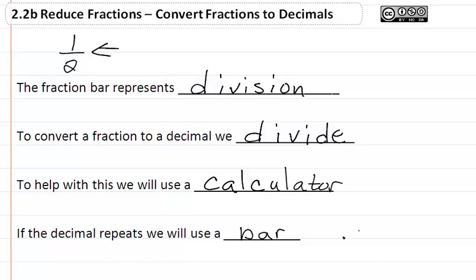So for example, if we get 0.3 repeating, meaning we get a bunch of 3's after it, we would write it as 0.3 with a bar over the 3.